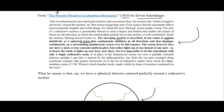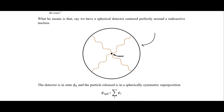The emerging particle — the particle of radiation — is described, if one wants to explain intuitively, as a spherical wave that continuously emanates in all directions and impinges continuously on a surrounding luminescent screen over its full expanse. The screen however does not show a more or less constant uniform glow but rather lights up at one instant at one spot. So we have this atom, and the radioactive particle that comes off forms a spherical wave, hitting the spherical detector at all points — but what we actually see is that it hits at just a single point.